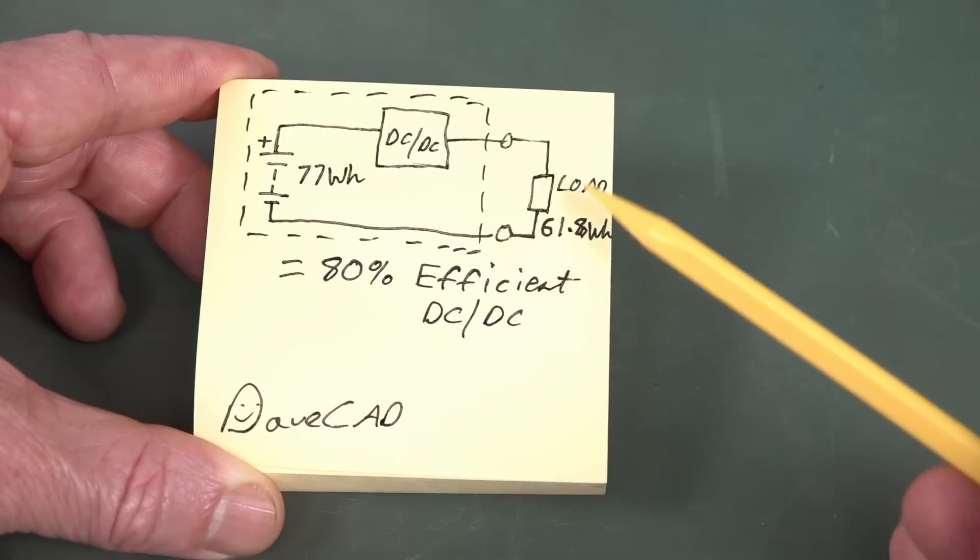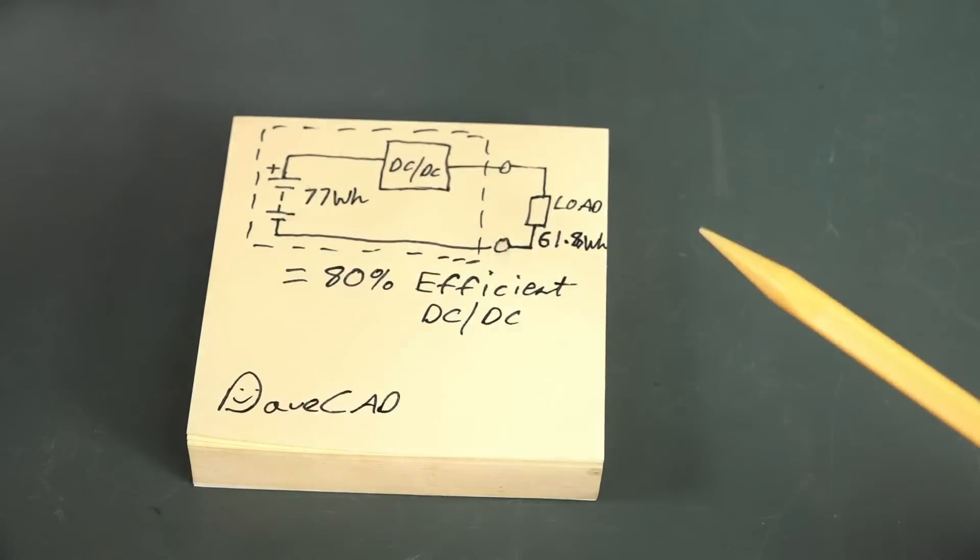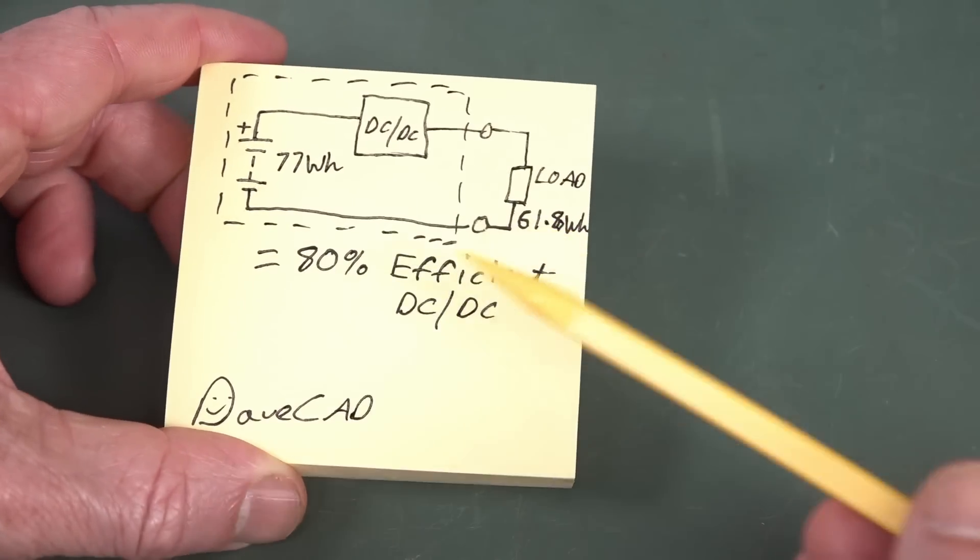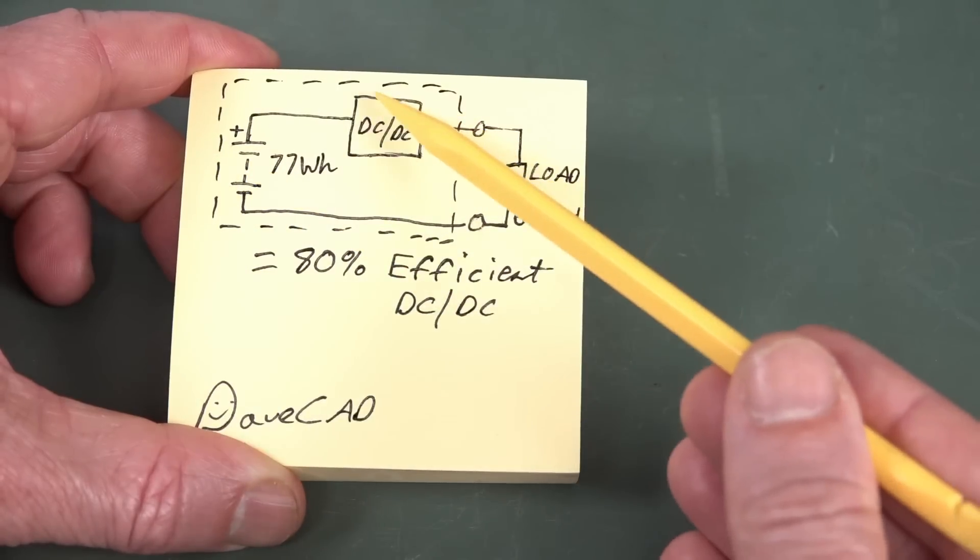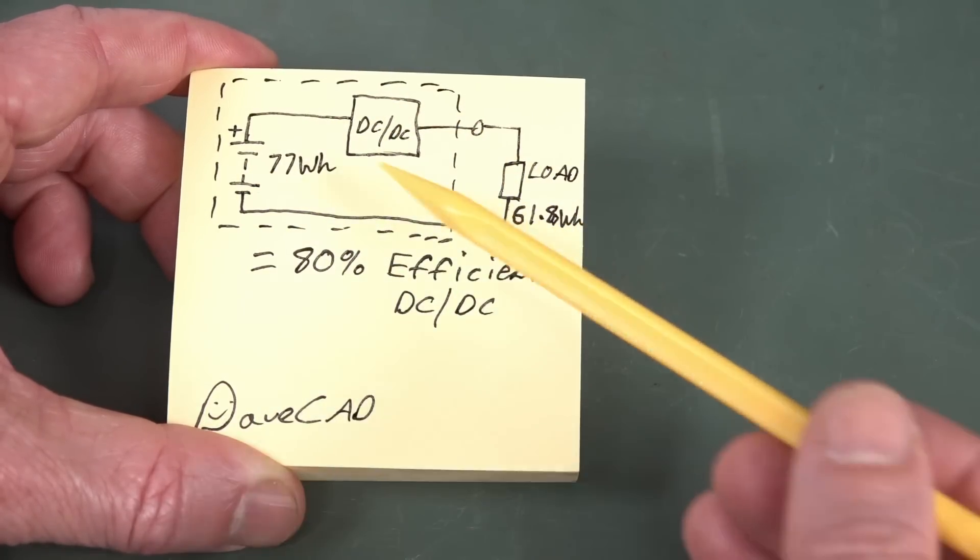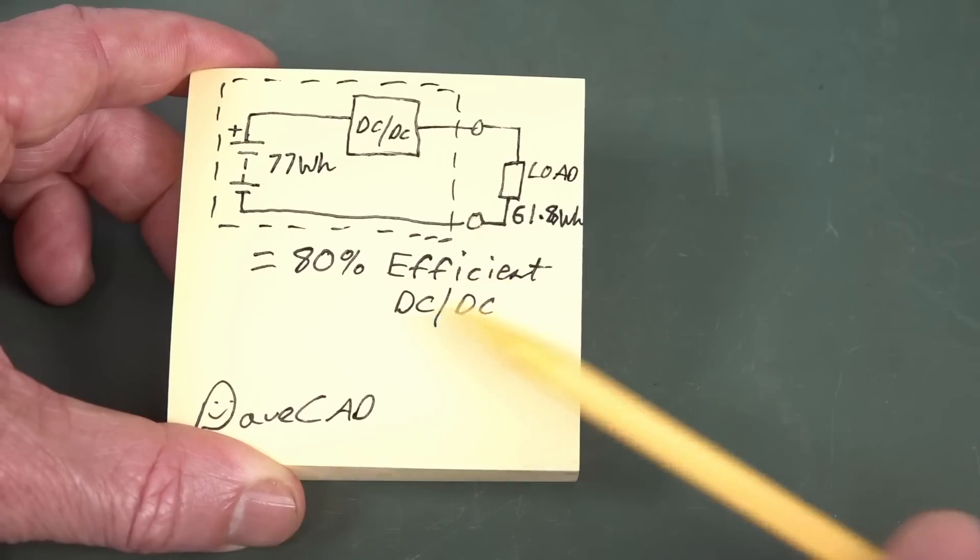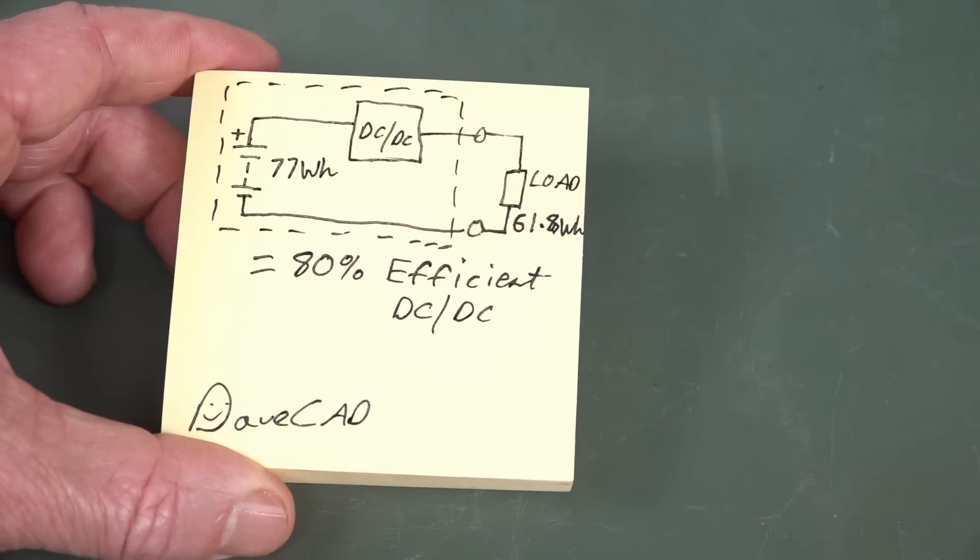It's not output-referred, which is what we measured with this thing, the 61.8 watt-hours here. So, the input-referred figure does not include the efficiency of the DC-to-DC converter. So, 61.8 watt-hours into 77 watt-hours, that is an 80% efficient DC-to-DC converter.